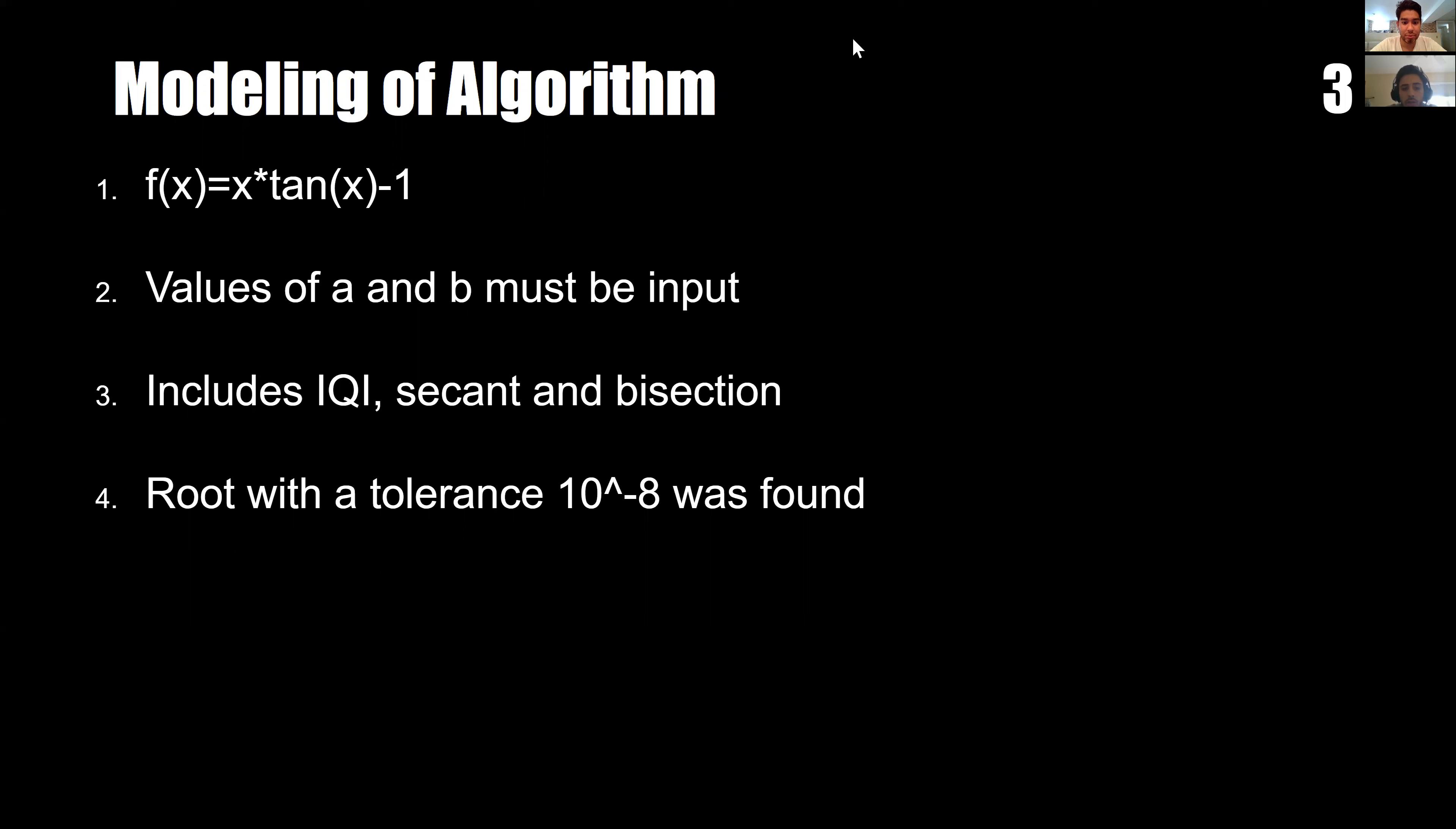The code includes inverse quadratic interpolation, secant, and bisection methods, and it optimizes them to produce the lowest number of iterations.